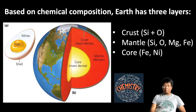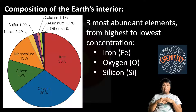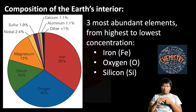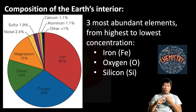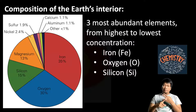I want you to remember the three most abundant elements for the entire Earth. Iron would be the most abundant element for the entire Earth. The second one is oxygen. And the third most abundant element would be silicon.